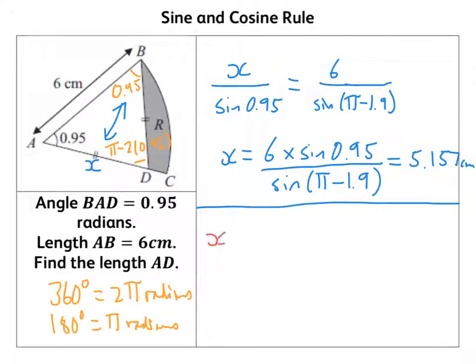I'd have x squared equals—and that's the sides either side. Remember that this is x as well because we've got an isosceles triangle—so x squared plus 6 squared minus 2 times x times 6 times cosine of 0.95. Work that through again, you get exactly the same answer.